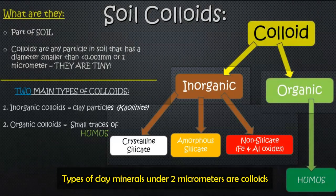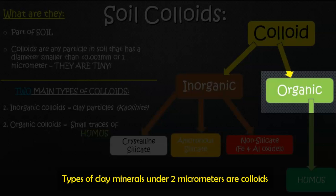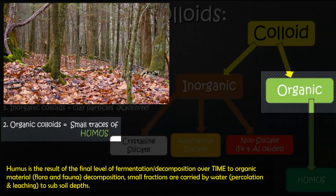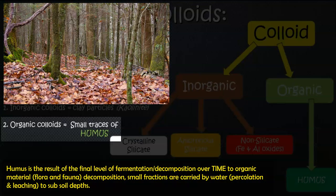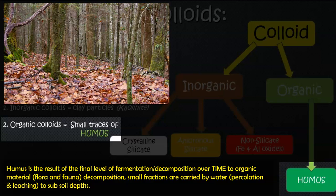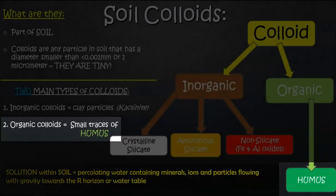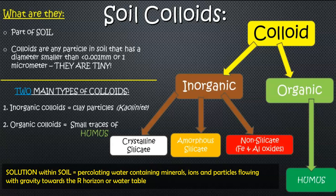Then you have organic colloids. Organic colloids come from plant material, detritus, and decomposing material in the O and A horizon. Through different stages of decomposition, this creates humus. Humus is the final stage of decomposition — you can't decompose it any further — and the small traces of this humus are the organic colloids. Both inorganic and organic colloids are present in solution, and they can also be called a micelle because they are little bits or aggregates within the solution, transported usually by water through leaching and percolation in the soil.